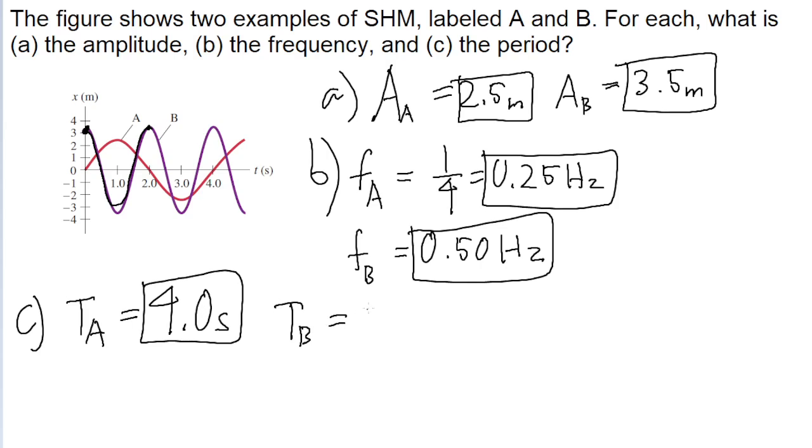Similarly for function B, we can see from the graph that one cycle is completed every 2 seconds. So 2 seconds is the answer for function B.